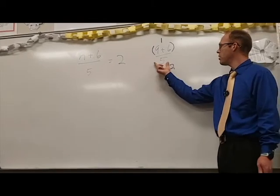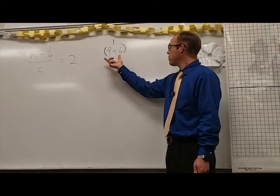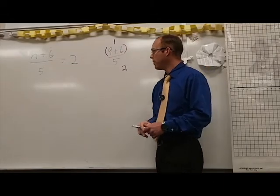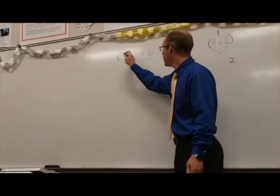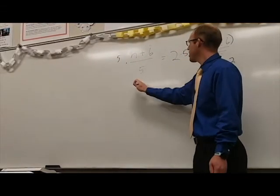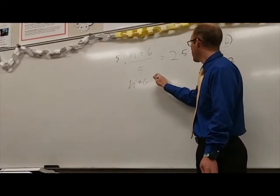That means we're going to undo this five, or the division, followed by this addition up here. All right, how do I undo this division by five? We're going to multiply by five, and we'll do that to both sides. That gives us h plus six equals ten.